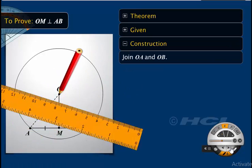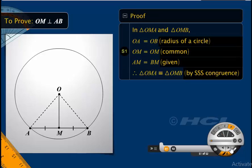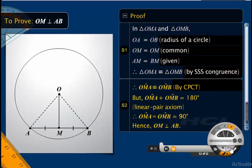Let's join OA and OB. Being the radius of the circle, OA is equal to OB. OM is common to both the triangles, and AM is equal to BM. Therefore, triangle OMA and triangle OMB are congruent to each other by SSS congruence. Thus, angles OMA and OMB are equal to each other by the property of corresponding parts of congruent triangles.